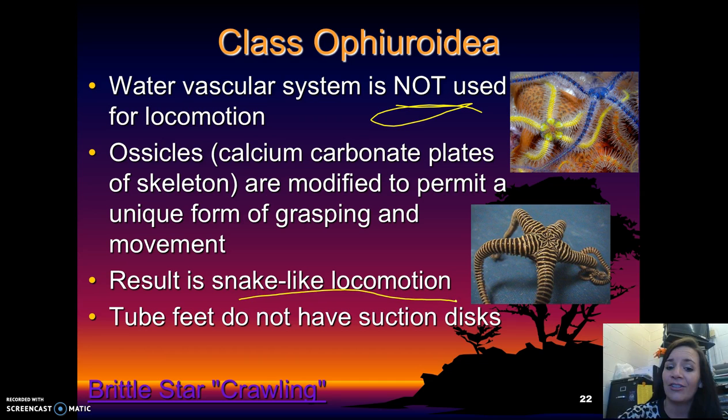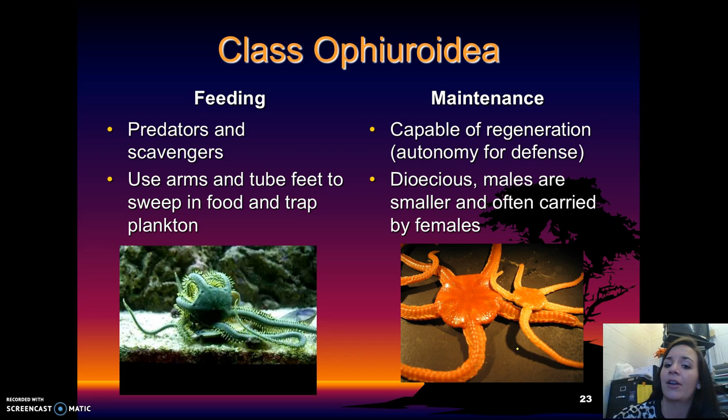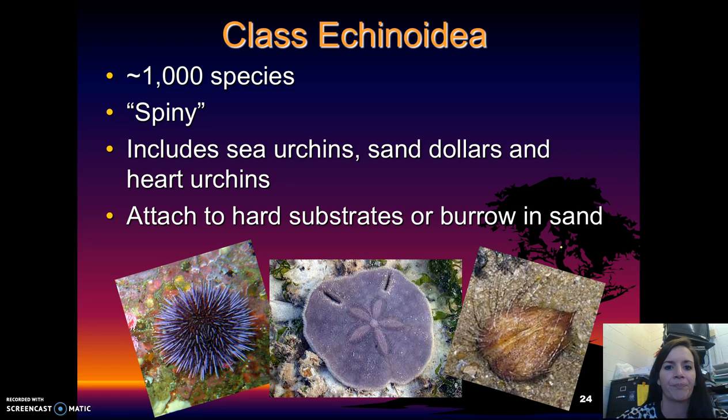This results in a snake-like locomotion. It's also important to note that their tube feet do not have suction discs. They are predators and scavengers, and they use their arms and tube feet to sweep in food and trap plankton. They are capable of regeneration and are dioecious. Males are typically smaller and are often carried by females.